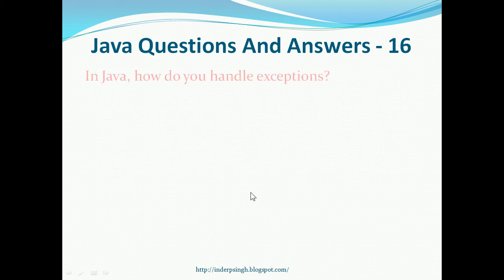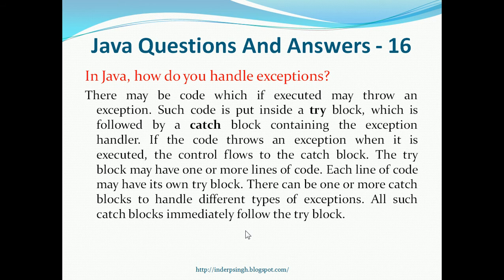Question 16. In Java, how do you handle exceptions? This is done with try and catch blocks. There may be code which, if executed, may throw an exception. Such code is put inside a try block, which is followed by a catch block containing the exception handler. If the code throws an exception when it is executed, the control flows to the catch block. The try block may have one or more lines of code, and each line of code may have its own try block. There can be one or more catch blocks to handle different types of exceptions, and all such catch blocks immediately follow the try block.